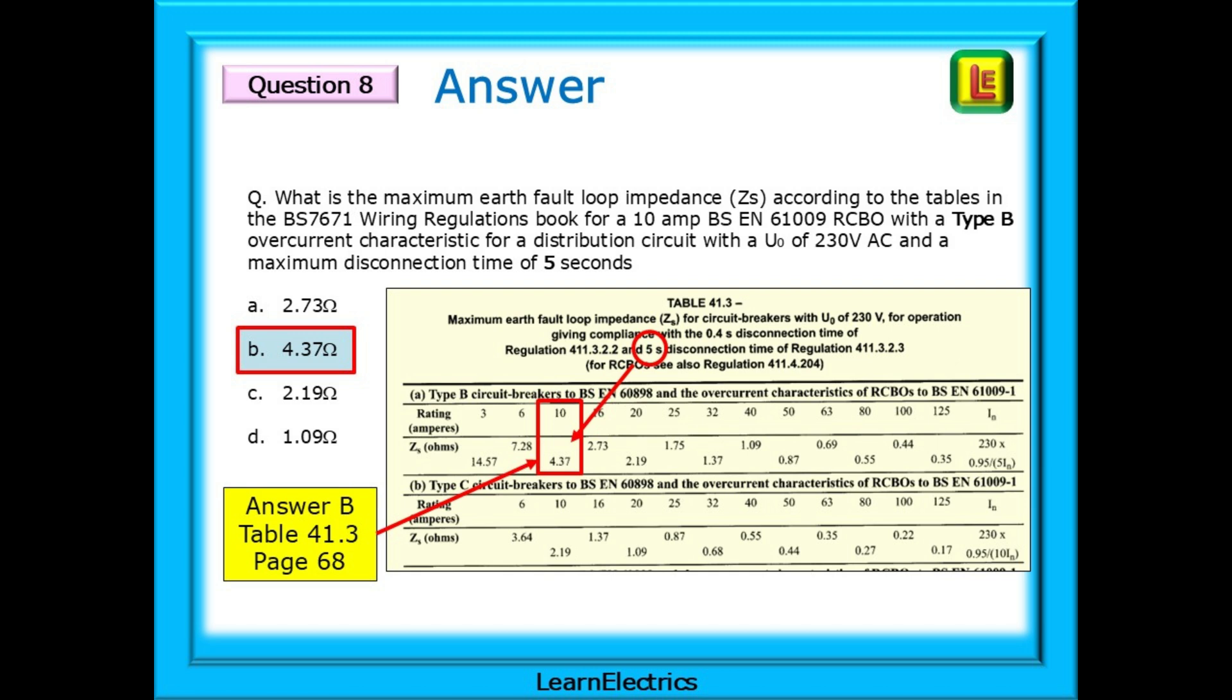You need to know that for BS EN 60898 circuit breakers and BS EN 61009 RCBOs, the ZS values for final circuits and distribution circuits are the same. They both use table 41.3.